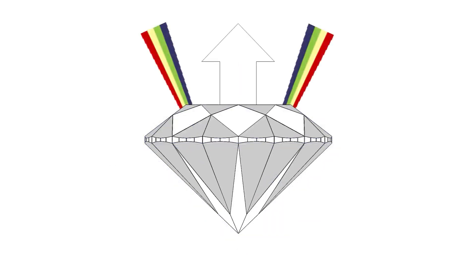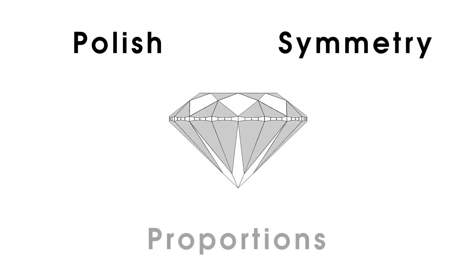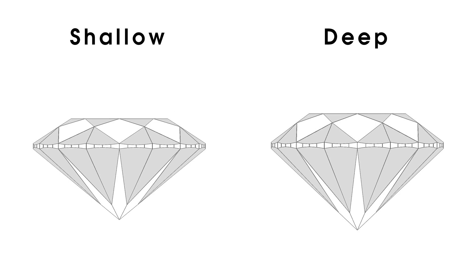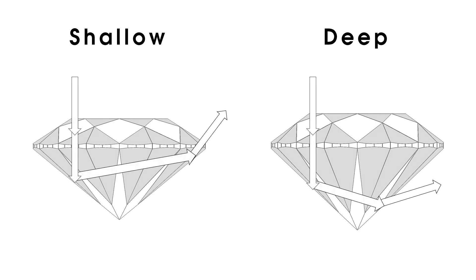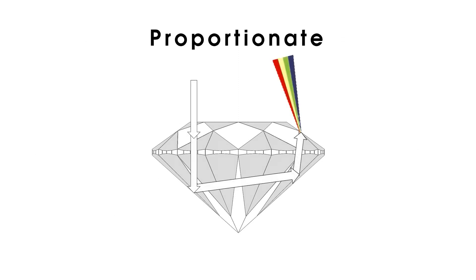For this reason, round brilliants are graded in polish, symmetry, and proportions. The way light behaves in a diamond depends on its proportions. Diamonds cut shallow or deep can appear dark for different reasons, but diamonds with proportionate geometries successfully reflect, refract, and return light to the viewer's eyes.